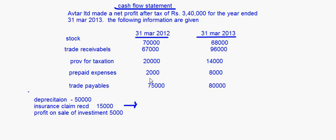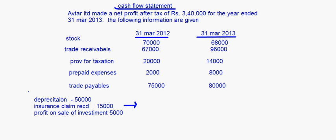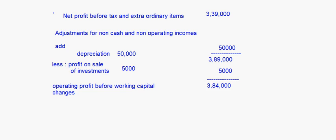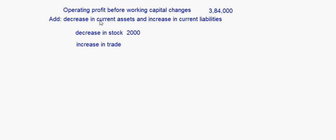Trade payables will come here. Provision for taxation is not going to come in working capital changes - if you had provision for doubtful debts that is a liability, but provision for taxation was already taken in the first step, so we won't consider it in working capital changes. Increase in trade payables: 75,000 to 80,000 means it has increased by 5,000 rupees. So increase in trade payables by 5,000.